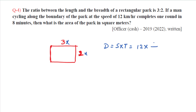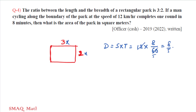Converting 8 minutes to hours: 8/60 hours. Distance = 12 × (8/60) = 96/60 = 8/5 km. This distance equals the perimeter of the rectangle, which is 2(3x + 2x) = 10x. So 10x = 8/5 km, giving x = 8/50 km = 160 meters.